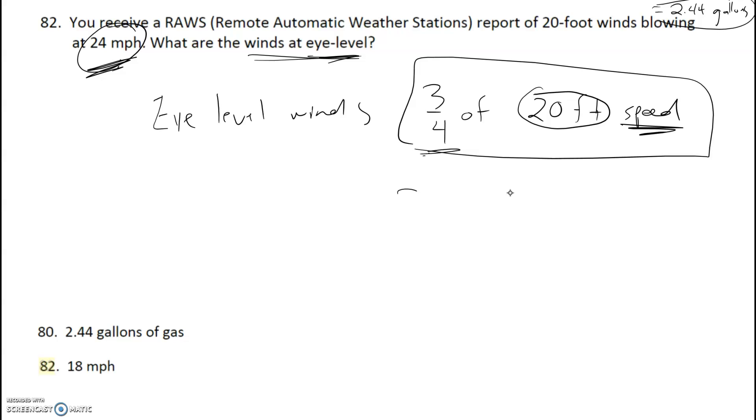So once we can make sense of that given data, the math is easy. Of course, the confusing part is interpreting that given data. So once we do three-fourths of that speed, three-fourths of 24 miles per hour would give you 18 miles per hour.